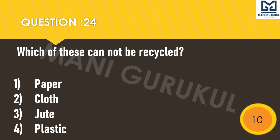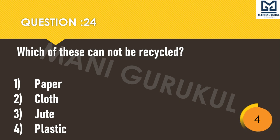Question 24: Which of these cannot be recycled? First: paper. Second: cloth. Third: jute. Fourth: plastic. Your time starts. This is the second last question — kindly subscribe this channel.